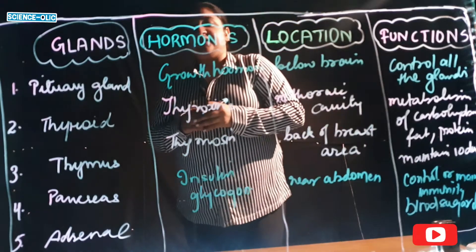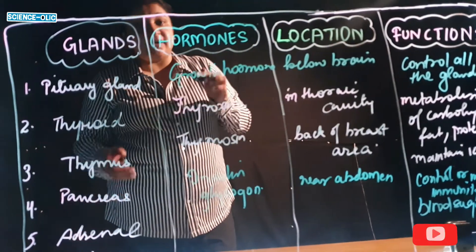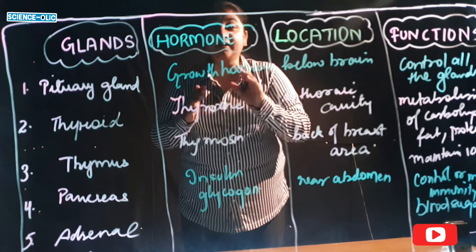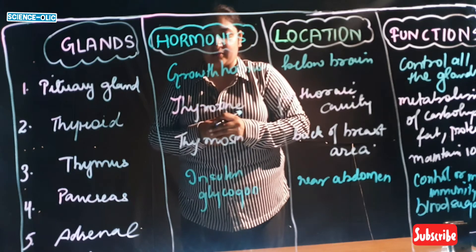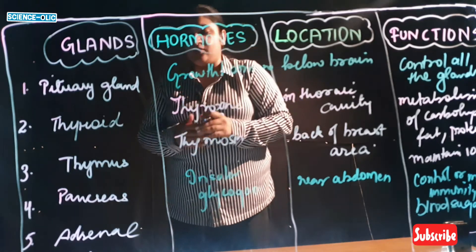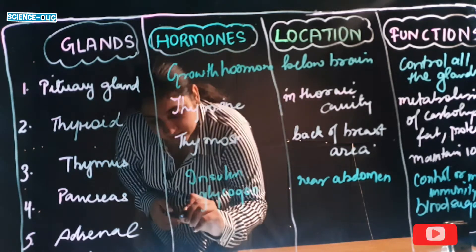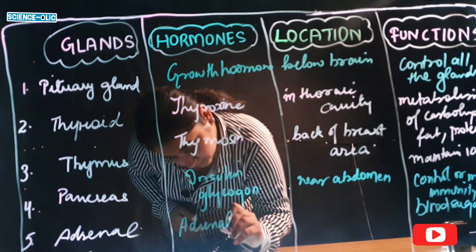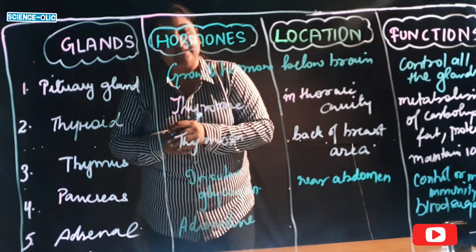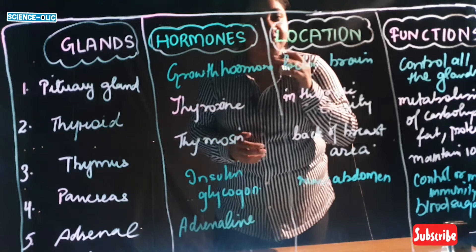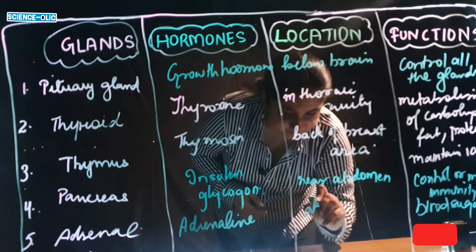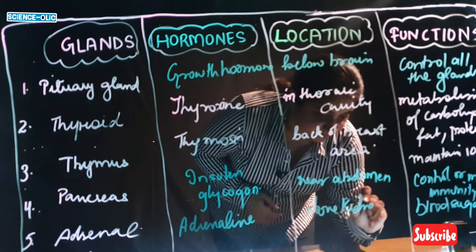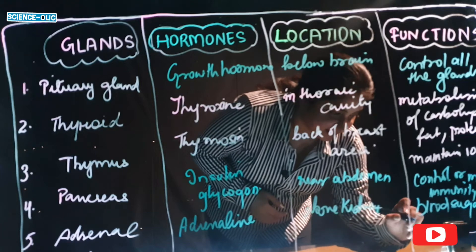The adrenal gland is known as the rush hormone, fight hormone, or scary hormone. It produces adrenaline and is present above the kidney.